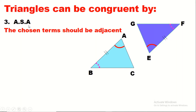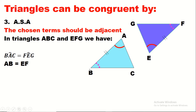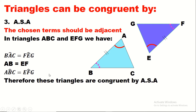For Angle-Side-Angle, the side must be included between the two angles. In the two triangles, we have angle BAC-salant equals angle GEF-salant (coded properties), AB equals EF (given or coded property), and angle ABC-salant (or CBA-salant) equals angle EFG-salant. Therefore these triangles are congruent by Angle-Side-Angle.